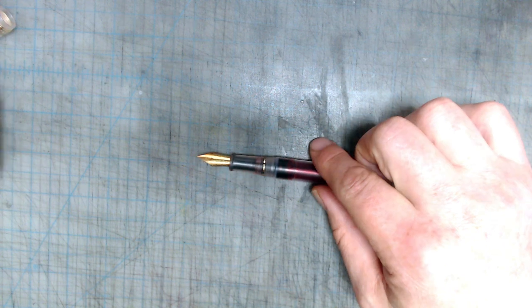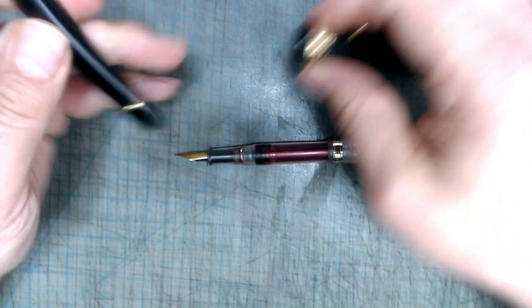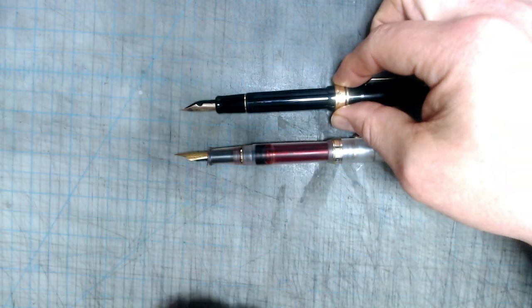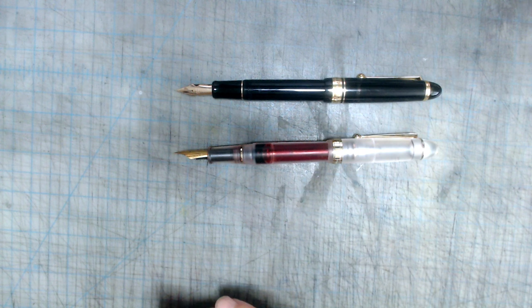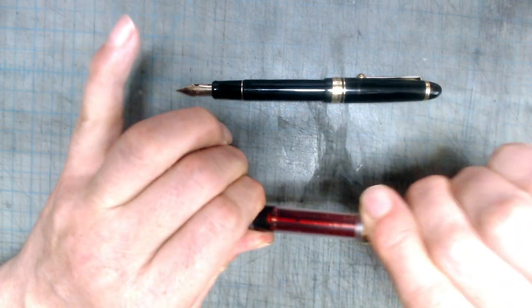The pen capped is just short of 6 inches and comes in slightly under 5 inches uncapped. And while it posts securely, for some reason it posts more shallowly than the A23, making it a little bit back heavy. However, that's really not a big deal because it's perfectly comfortable writing unposted.